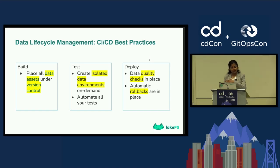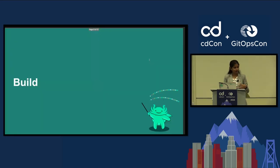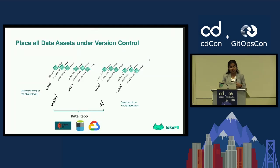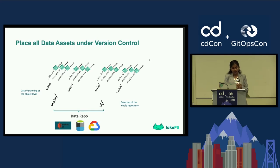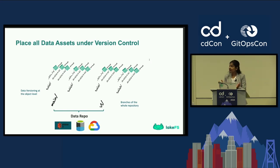How do we do this? Let's start with the build phase: we want to place all our data assets under version control. When I say data assets, I'm not talking about just file-level or table-level versioning. Today we have different open table formats — Apache Iceberg, Hudi, or Delta Lake — that give you table-level versioning. But we want to version the entire data lake or the entire data repository, which is how you bring all your data assets under one version control system.